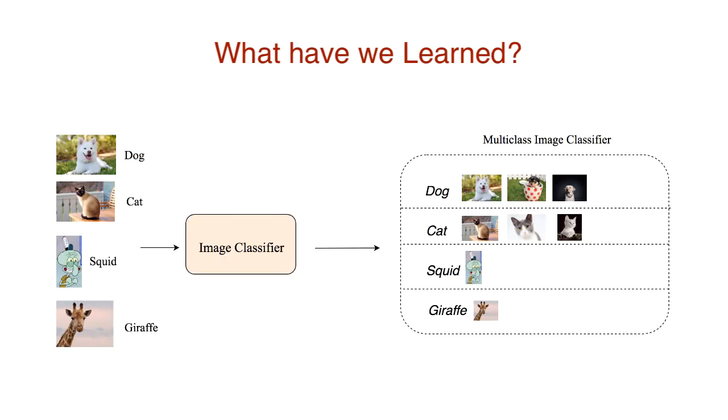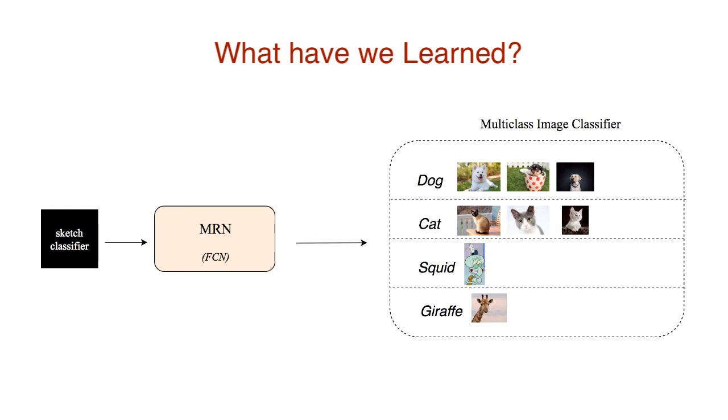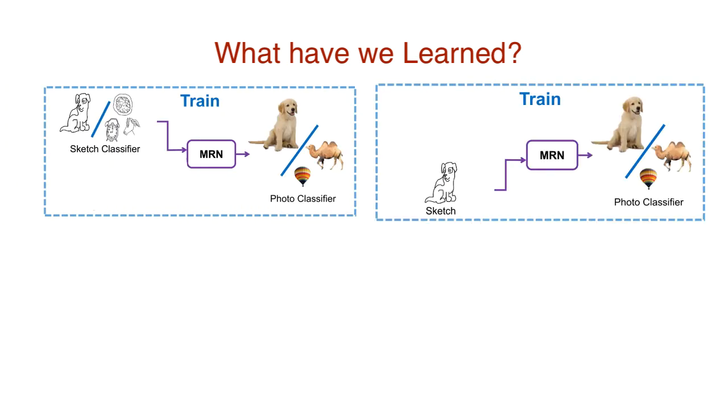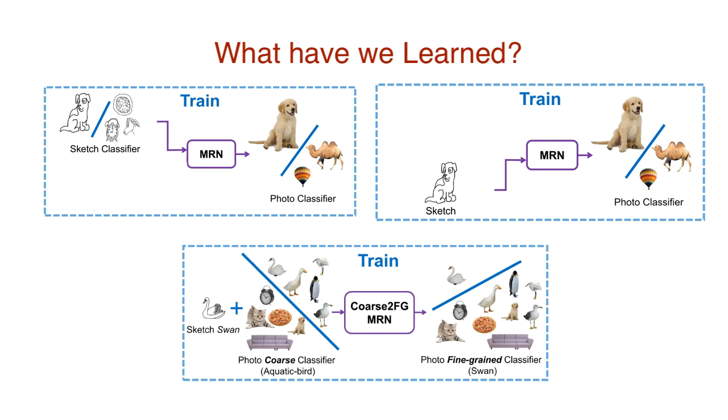So what have we learned today? Do photo classifiers perform better when you have all the data you need? Well, yes, yes they do. But it's usually the case where we don't simply have the abundance of annotated data. And this research shows us a method to overcome that drawback. We design a model regression network, an MRN, that are used to synthesize photo classifiers. MRNs are classified into three types depending on their inputs. We have an input sketch classifier, or an input sketch or sketches, or just input photo classifier and a sketch to create a more fine-tuned photo classifier.